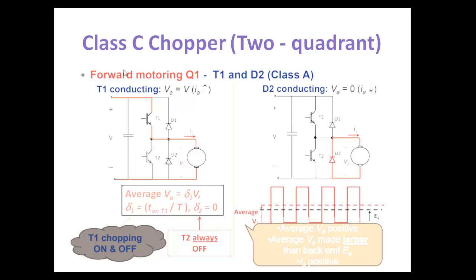For quadrant 1 forward operation, T1 and D2 conduct. When T1 is conducting, the source is connected in series to the load — current and voltage are both positive. The average voltage V_A equals delta_1 times V, where delta_1 = T_on/T and delta_2 = 0. Once T1 switches off, D2 conducts, the inductor releases its energy, current decreases in the same (positive) direction, and voltage becomes zero.